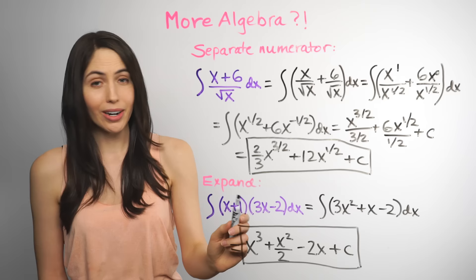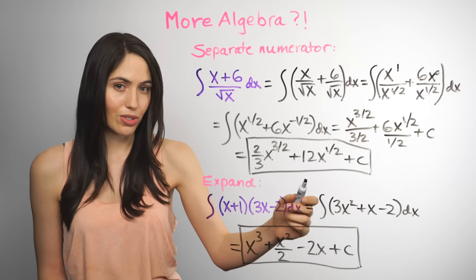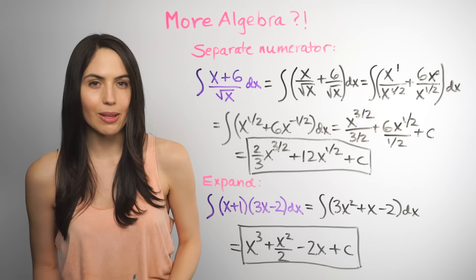This one, there's no product rule for integration, but you can multiply it out, distribute it, foil it, and use the power rule on each term, and that's the answer. So the idea here is always trying to get it into a form that fits a basic integration rule.